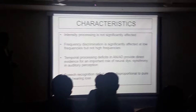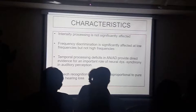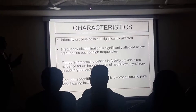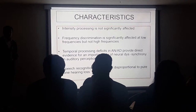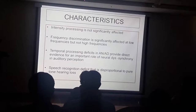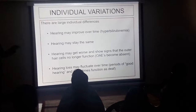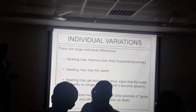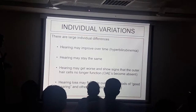What are the characteristics? Intensity processing is not significantly affected — the patient may have a normal to profound hearing loss. Frequency discrimination is significantly affected, especially the high frequencies. Temporal processing defect is present. Speech recognition deficit is disproportionate to pure-tone loss — the speech discrimination is much worse than what the pure-tone loss alone would suggest. There are large individual variations: hearing may improve over time, particularly in hyperbilirubinemia cases; hearing density may stay the same; or hearing may get worse and even the outer hair cell response may be lost. Hearing loss may also fluctuate over time.